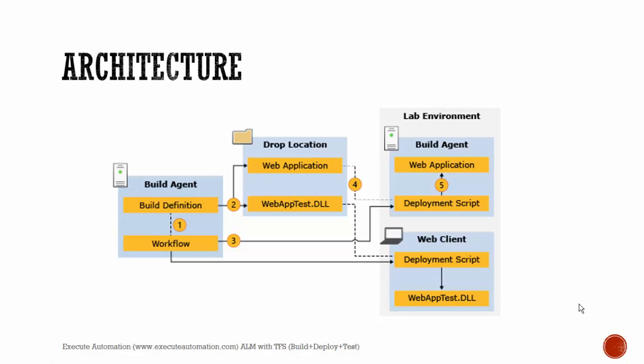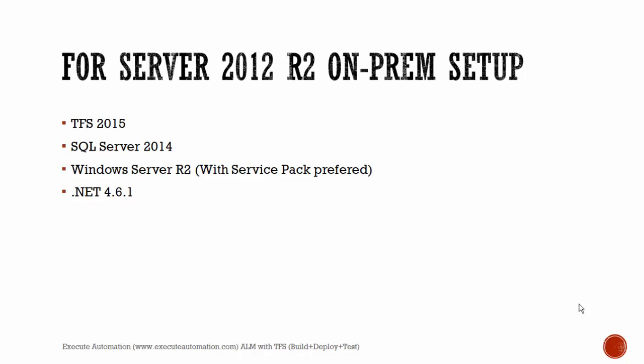After seeing this architecture, you'll wonder about the environment setup. For a Server 2012 R2 on-premises setup, the critical requirements are: Team Foundation Server 2015, SQL Server 2014 installed on the server machine, Windows Server R2 with a service pack (preferred), and .NET 4.6.1. With TFS 2015 Update 1 you must have .NET 4.6.1 — even if you don't have it, it will automatically install for you. This is the actual on-prem setup for hosting your Team Foundation Server.